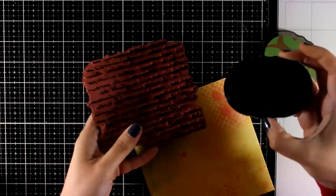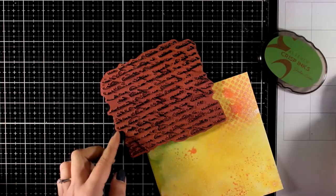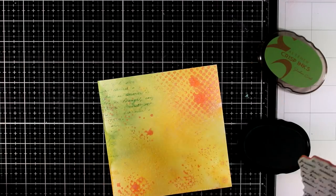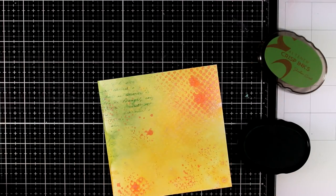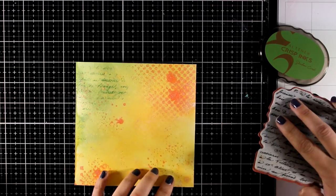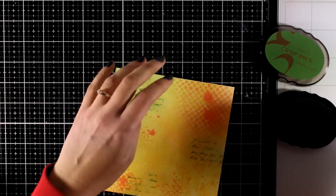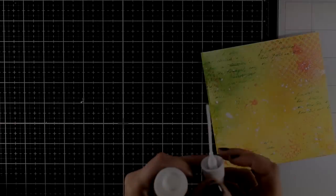Now I'm going to do a couple more favorite techniques on my backgrounds. First, I'll use this text stamp and stamp all over the background. I'm not going for perfect impressions, just bits and pieces here and there. I'm using green ink because I'll have green details on my focal point, like the leaves and stem.